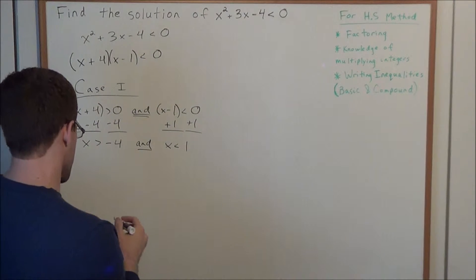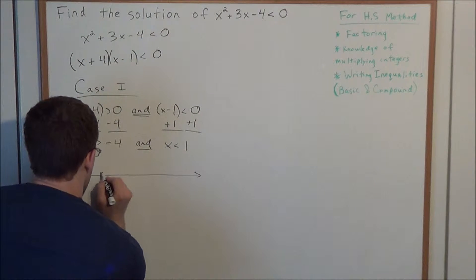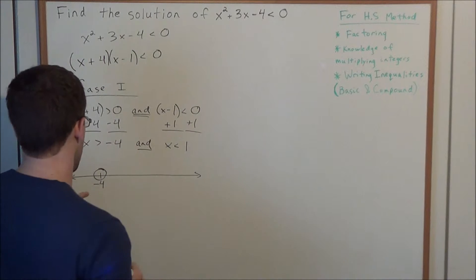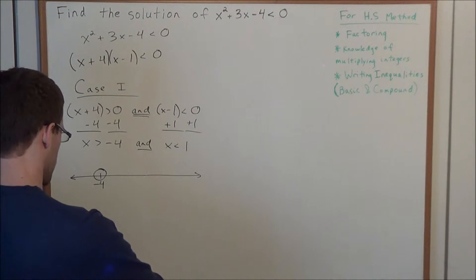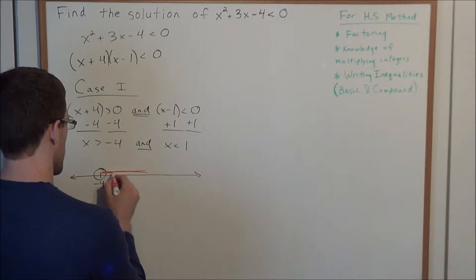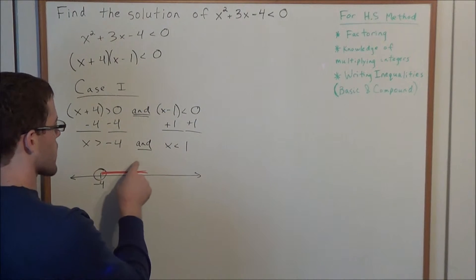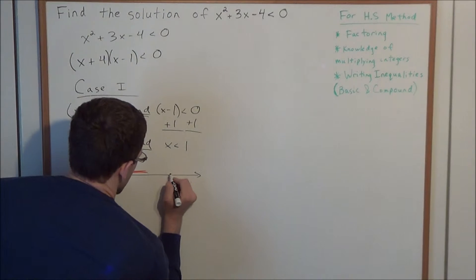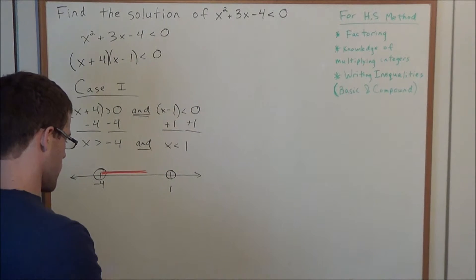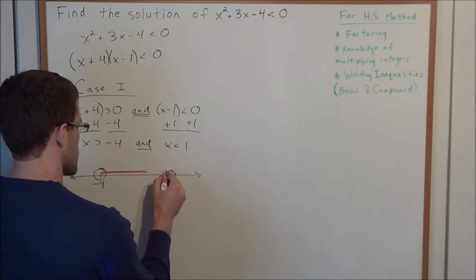So now we need to graph this. We have x is greater than negative 4 — since it's strictly greater than, we put an open circle, and shade everything to the right of negative 4. Now for the second statement, x is less than 1 — we put an open circle at 1 and shade everything to the left of 1. Notice how these solution sets, in some sense, collide.